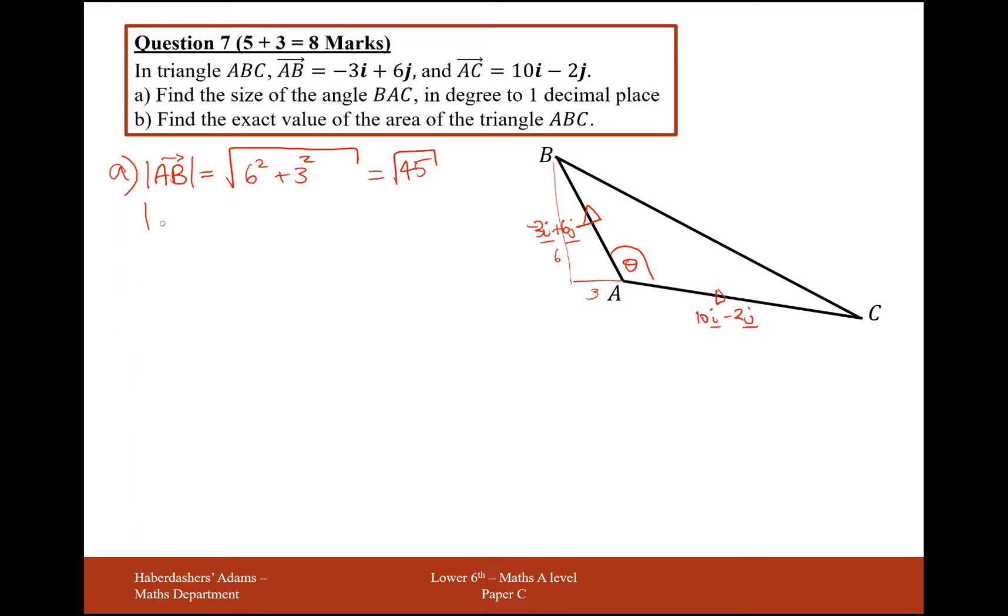The length from A to C, in a very similar way, Pythagoras triangle down 2 across 10, so the length is going to be the square root of 10 squared add 2 squared, which is square root of 104.